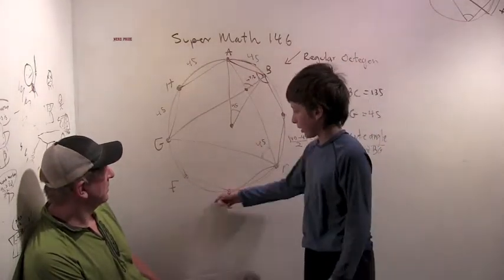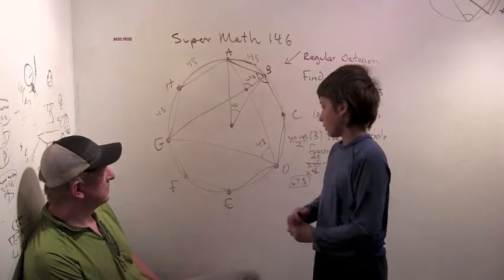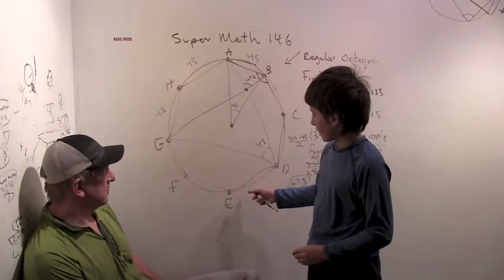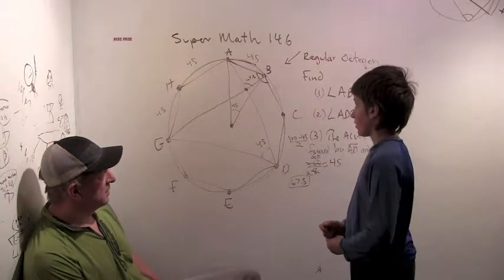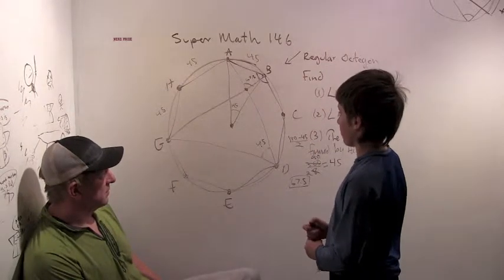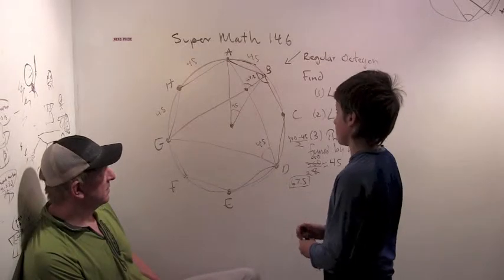So, three times 45, that's going to be, well it's 90 plus 45, so 135. Alright. So, 135 plus 45 is 180 over two is 90. Great question by me, huh?